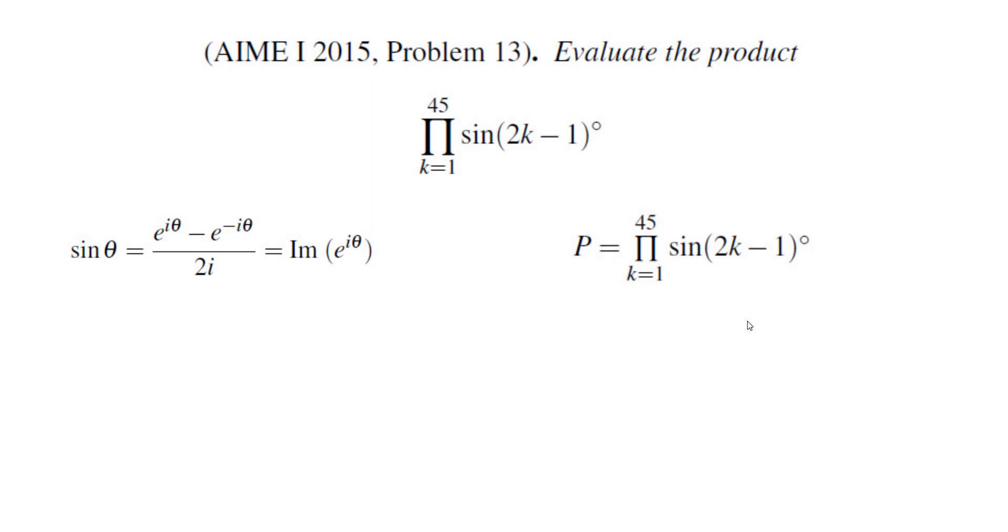Let's call this product P. This P can be written as the product of (e^(i(2k-1)) - e^(-i(2k-1)))/2i. Let's simplify by factoring all the 2i's and factoring the negative exponents from the numerator, and this is what we get.